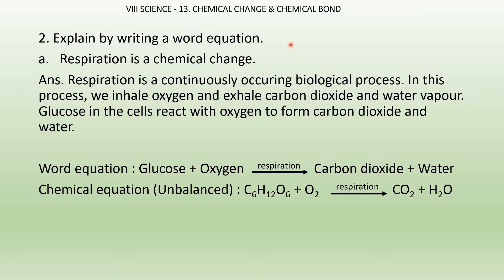Next question: explain by writing a word equation. Respiration is a chemical change — it is a continuously occurring biological process in all living beings. We inhale oxygen and exhale carbon dioxide and water vapor. Glucose in the cells reacts with oxygen to form carbon dioxide and water. Word equation: glucose + oxygen → carbon dioxide + water. Unbalanced chemical equation: C6H12O6 + O2 → CO2 + H2O.